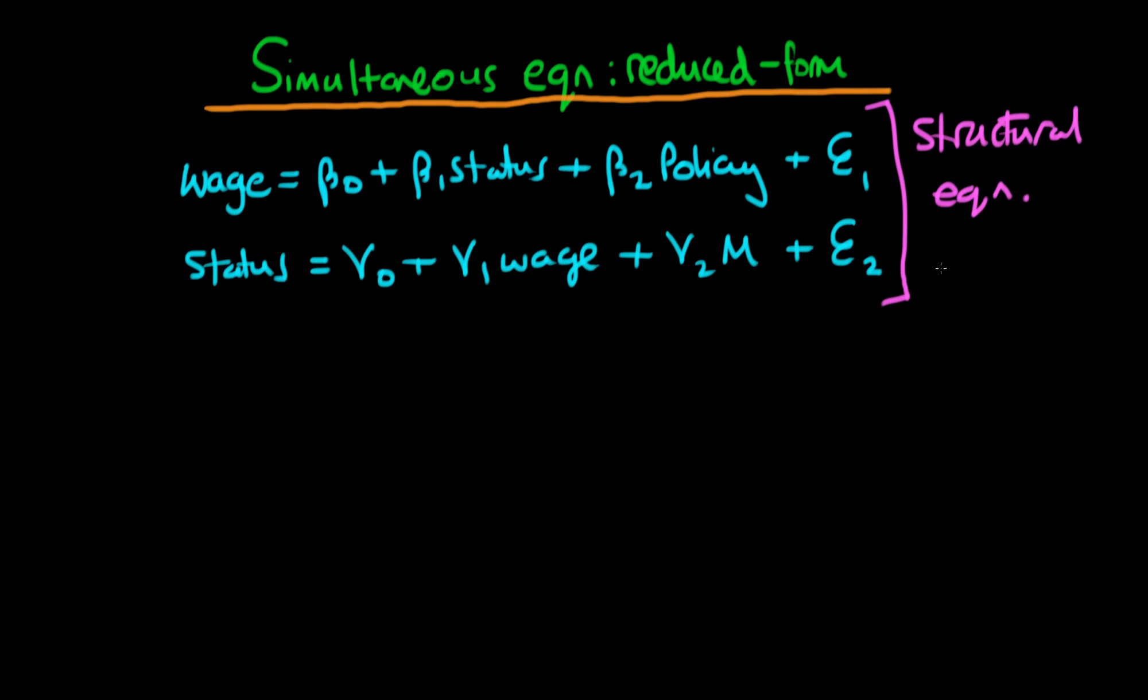But we spoke about the issue of estimating these two equations via OLS and we found that because wage is going to be correlated with the error term epsilon 2 and because status is correlated with epsilon 1, OLS will both be biased and inconsistent. So we know that doing OLS on these two equations isn't necessarily the right thing to do.